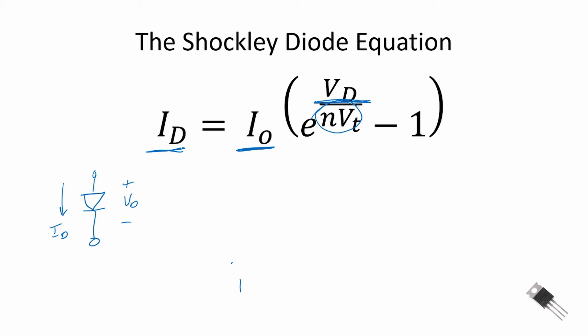V_T is the thermal voltage of the diode and is equal to K, Boltzmann's constant, times T, the temperature of the p-n junction in degrees Kelvin, divided by Q. For photovoltaic panels, we often see the temperature specified at standard testing condition (STC) with a temperature equal to 25 degrees centigrade. At that temperature, the thermal voltage is approximately 26 millivolts.